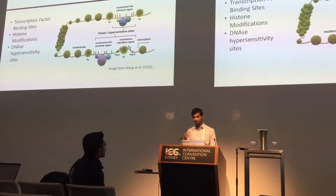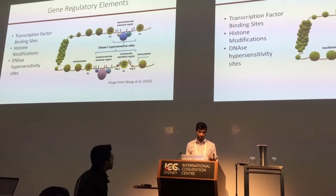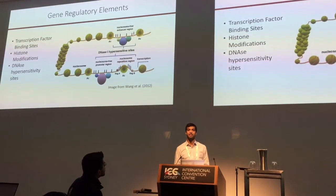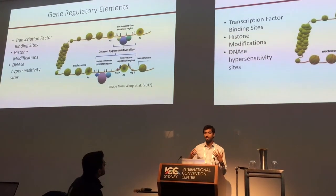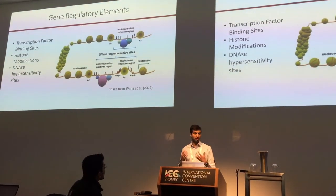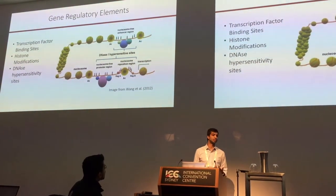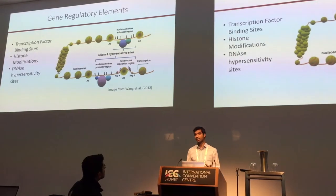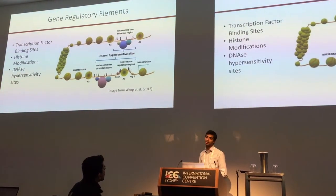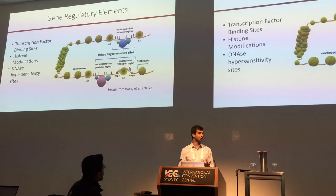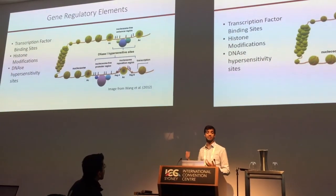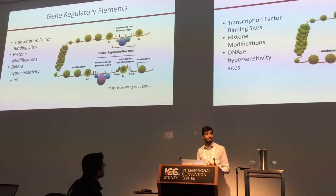In general, when we're talking about genetic regulation, there are a bunch of different types of genetic markers that we're usually interested in. The reason we're interested in these is that the regulation of genes in terms of which ones are expressed with cell types is mediated by the interactions of a variety of proteins with DNA. The key protein we care about is transcription factors, which bind in various regions such as promoter and enhancer regions.